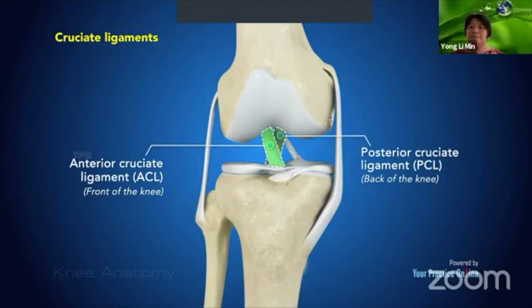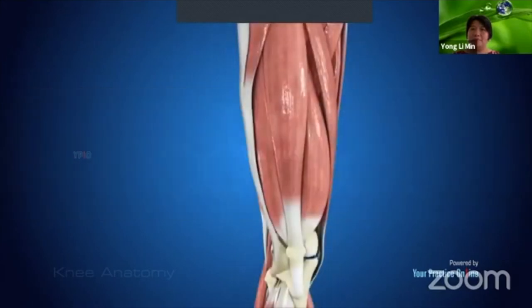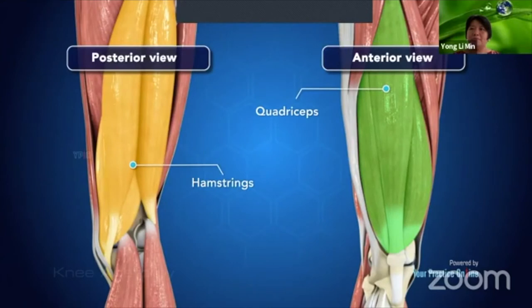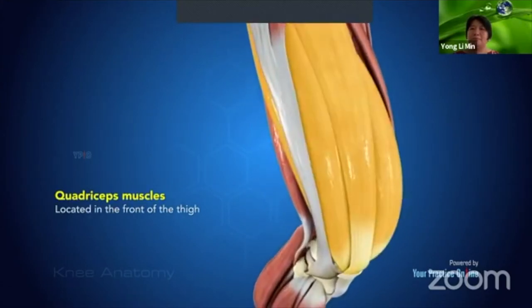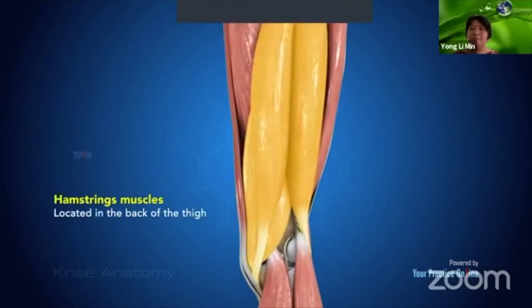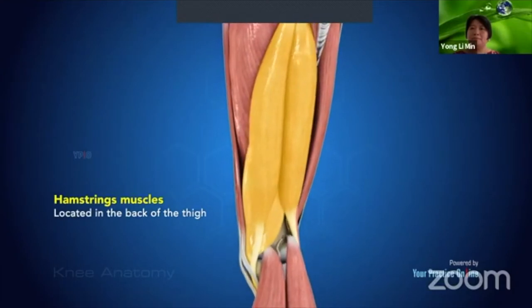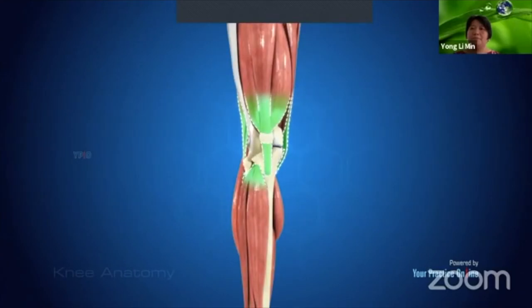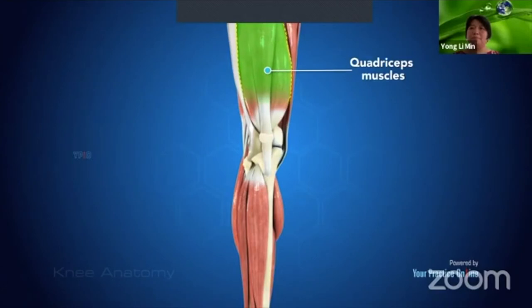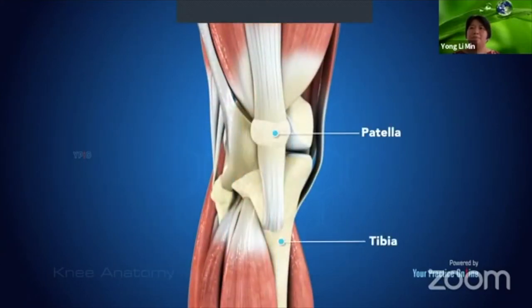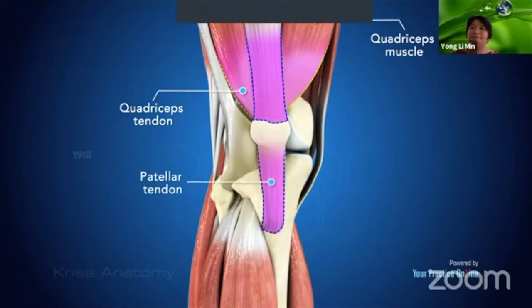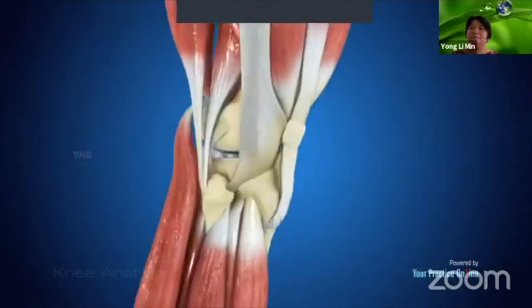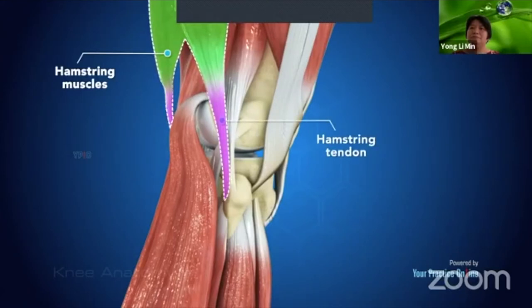There are two major muscles: the quadriceps in the front of the thigh, which straighten the knee, and the hamstrings at the back, which bend the knee. Tendons attach these muscles to bones. The quadriceps tendon connects above the patella, and the patellar tendon connects the patella to the tibia. The quadriceps muscle, quadriceps tendon, and patellar tendon all work together to straighten the knee.